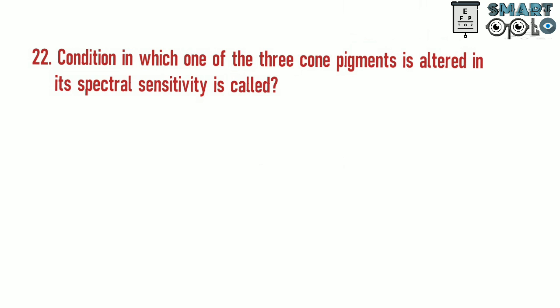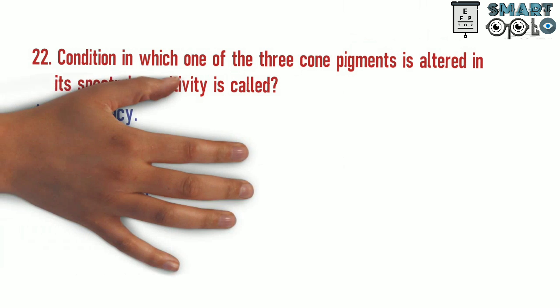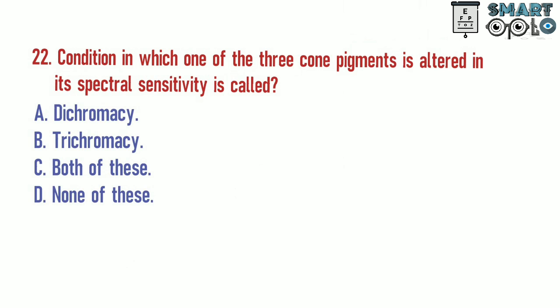Question 22. A condition in which one of the three cone pigments is altered in its spectral sensitivity is called: A. Dichromacy. B. Trichromacy. C. Both of these. D. None of these.